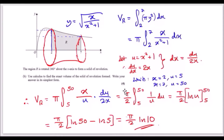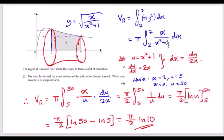Next, use calculus to find the exact volume of the solid of revolution. Drawing a hollow circular cross-section helps visualise it. The radius corresponds to the y-axis, so the volume is the integral from 2 to 7 of πy² dx. Replacing y with the root of x over (x² plus 1), squaring gives just x over (x² plus 1). Now we integrate this using substitution.